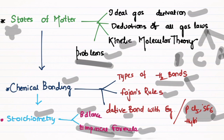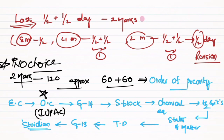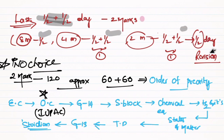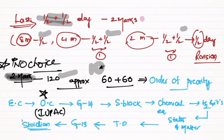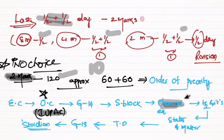This is the complete pattern for all 65 questions. Spend the last one day on four-mark questions and half a day on eight-mark questions — this is the 60 out of 60 pattern. For the 2-mark questions, there are 120 questions total. Important 2-mark topics include IUPAC and dynamic equilibrium, which appeared as a first question last year.